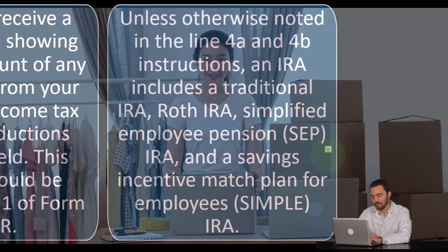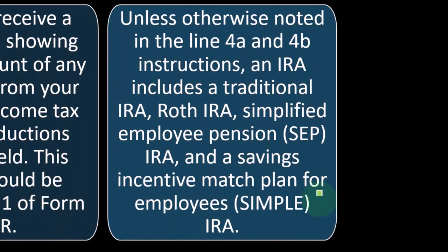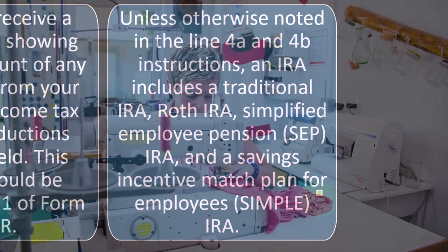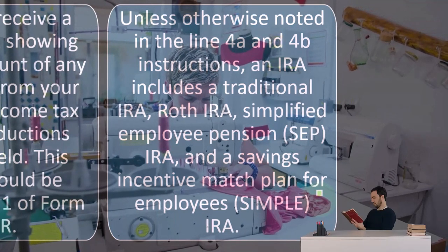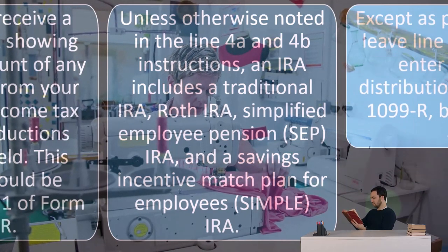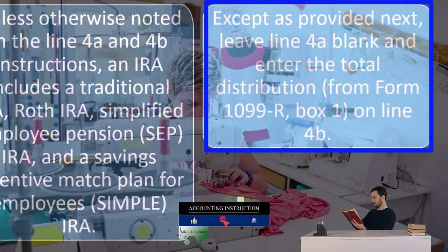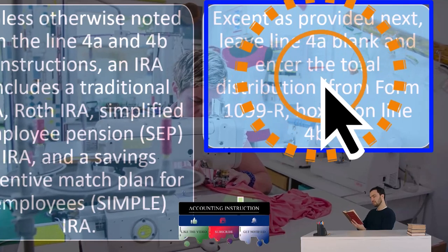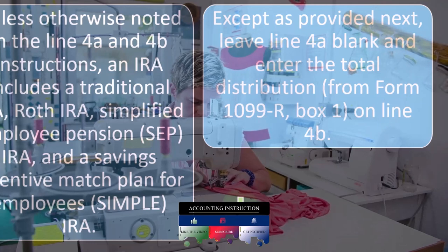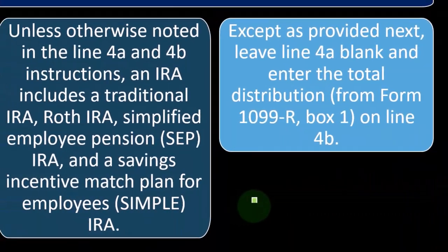A savings incentive match — a SIMPLE IRA — is a similar concept. It's like a 401k for a small business, trying to mirror some of the benefits and give the owner more ability to put money into a retirement account for a tax benefit, without the burden and expense of setting up a 401k. For the form instructions, except as otherwise provided, leave line 4A blank and enter the total distribution from Form 1099-R box one on line 4B. We're talking about the distribution side — taking money out that had been put into an IRA.